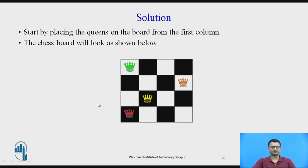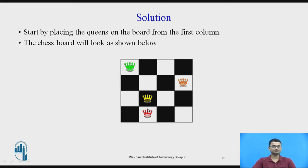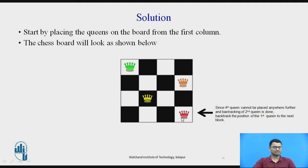Now we want to place the fourth queen, starting with the first column — unsafe, as it can attack two other queens. The second position is also unsafe because it still attacks the second queen diagonally and the third queen. The third position is unsafe as queens 3 and 4 would be in the same column. The fourth position is also unsafe because queens 3 and 4 would be in the same diagonal. Since the fourth queen cannot be placed anywhere and backtracking of the second queen is already done, we backtrack the first queen to the next block.